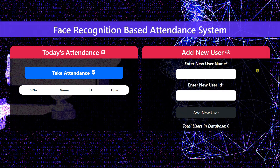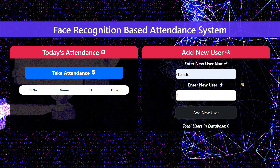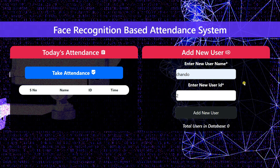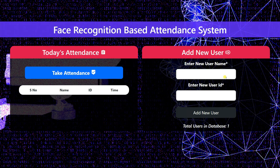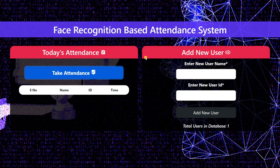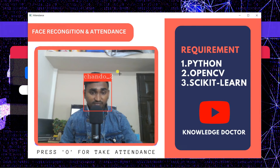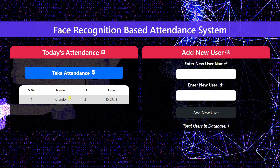Let's have a look at the demo first. This is our demo application called the face recognition based attendance system using Python and Flask. I'll enter a username — 'Chando' — and an ID of '2' for testing purposes, then click 'Add User'. It opens the webcam and takes 10 pictures for training. When I click 'Take Attendance', it opens the webcam again and you can see it detecting 'Chando' with ID '2'. Pressing Escape automatically saves the attendance to the database.